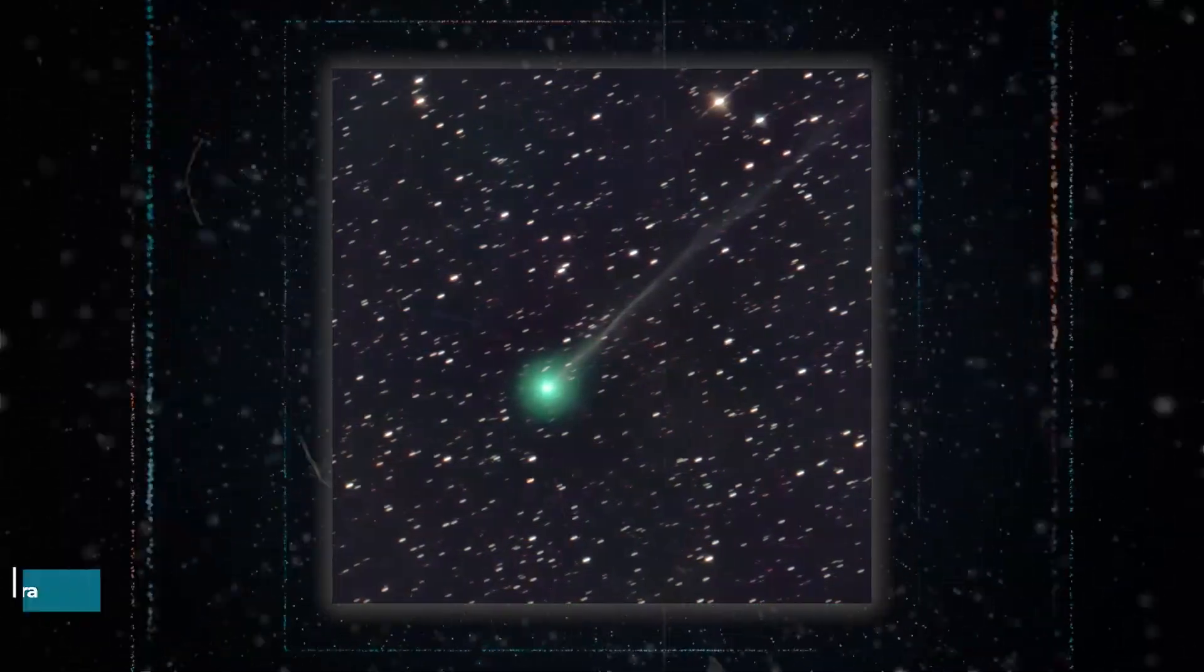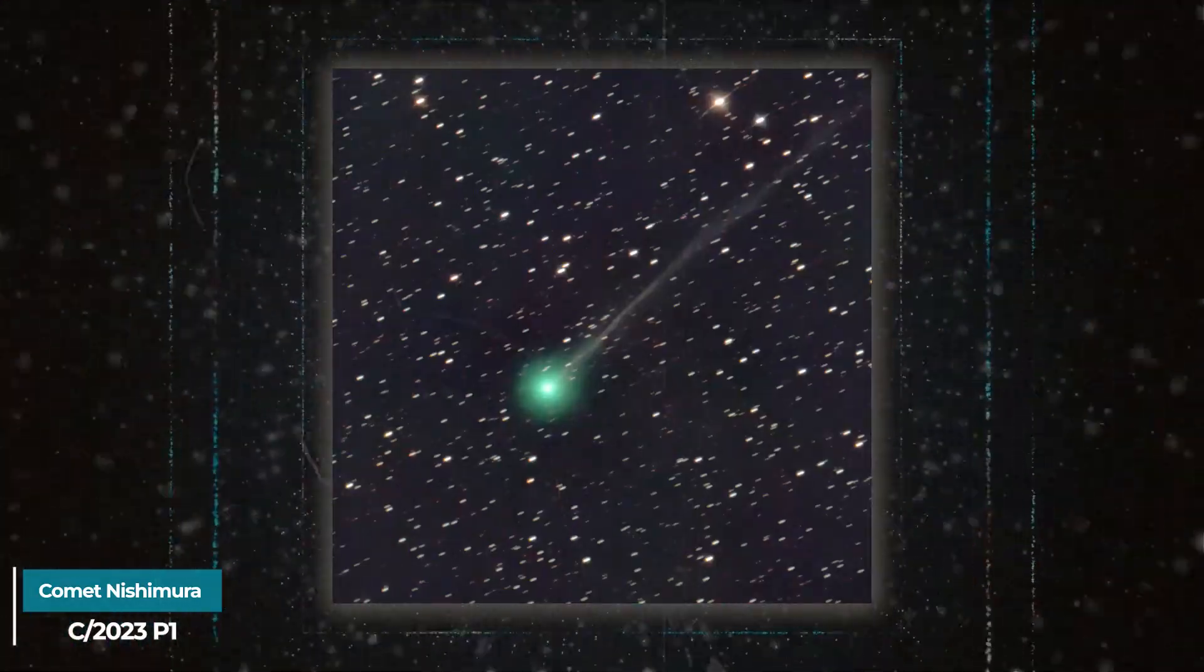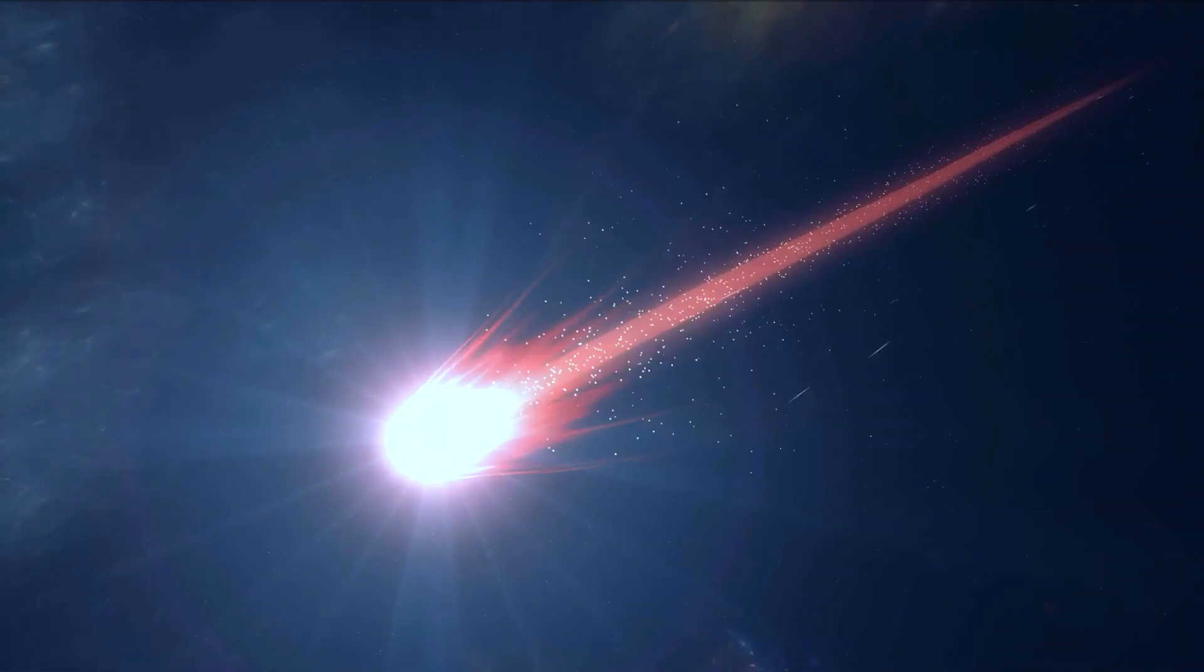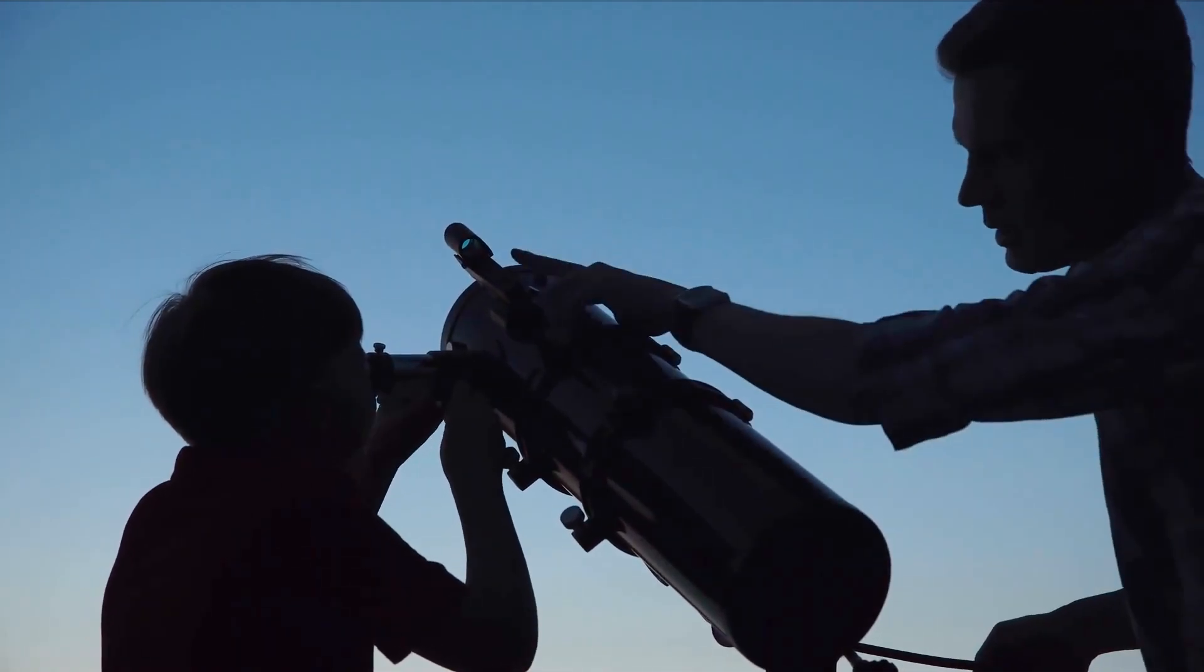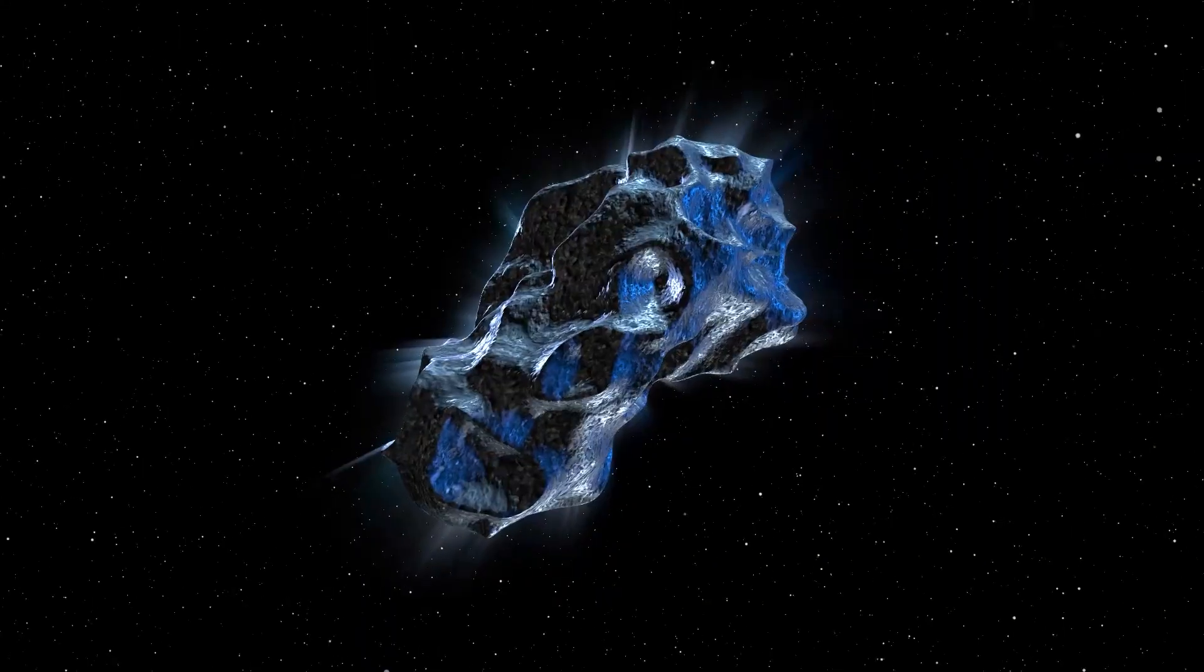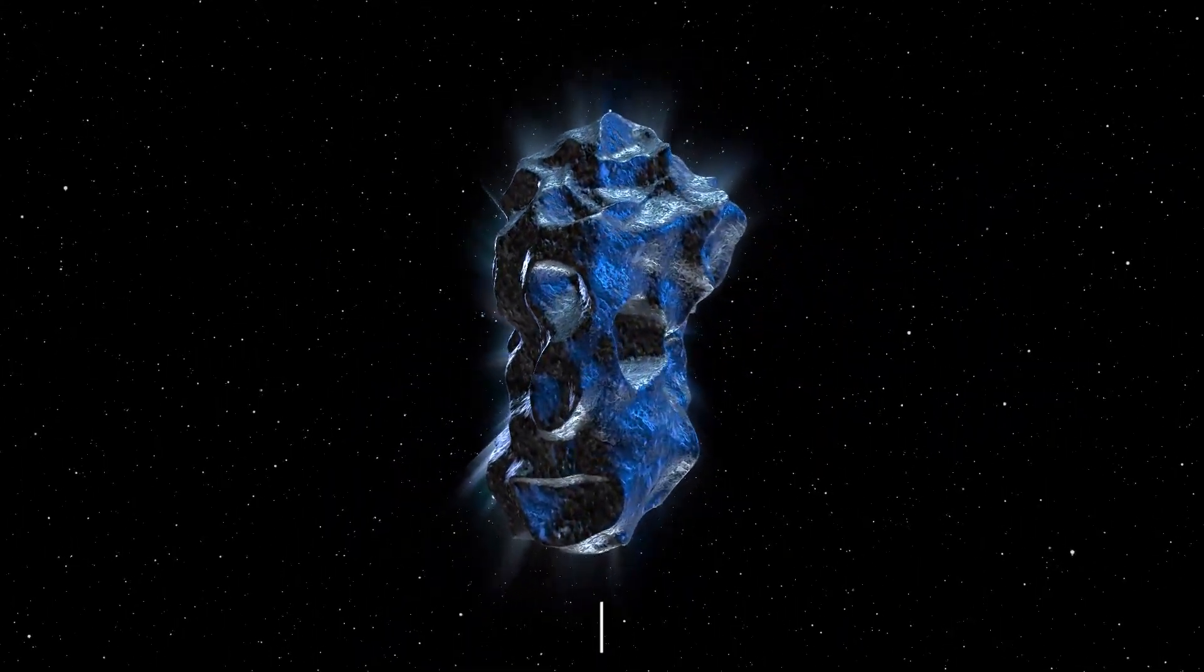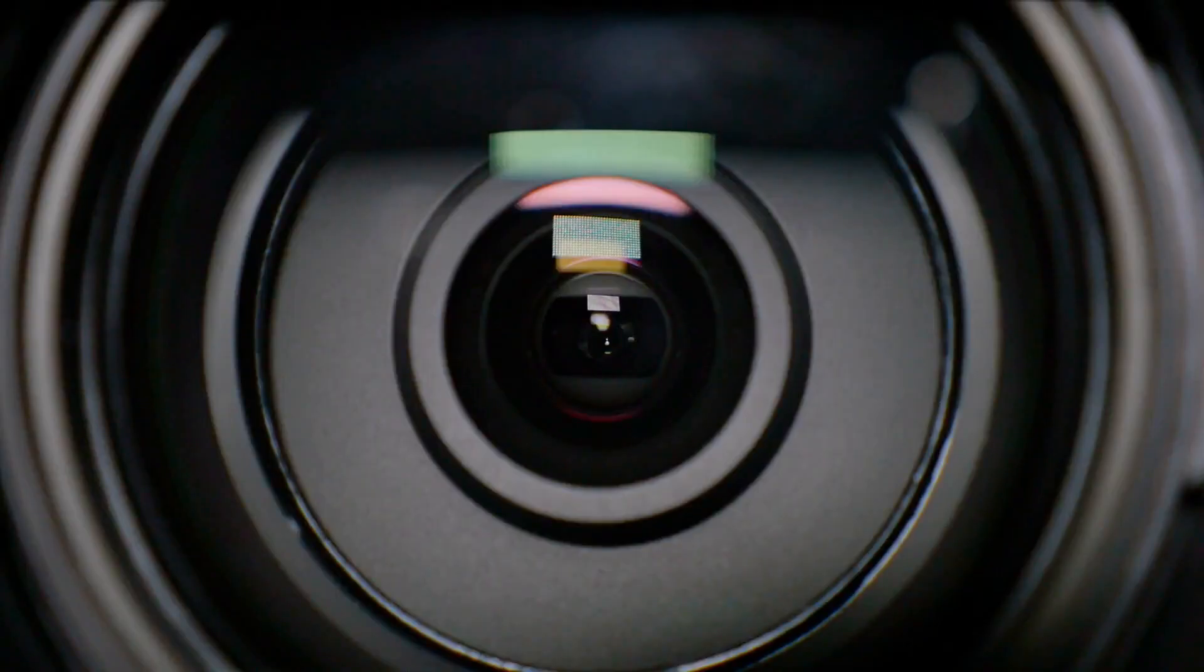This comet is named Comet Nishimura C/2023 P1. Everyone was curious whether Comet Nishimura would become visible to the naked eye. Hideo Nishimura of Kakigawa City, Japan, made the initial discovery of the enigmatic comet on August 12 using a typical digital camera captured during 30-second exposures.